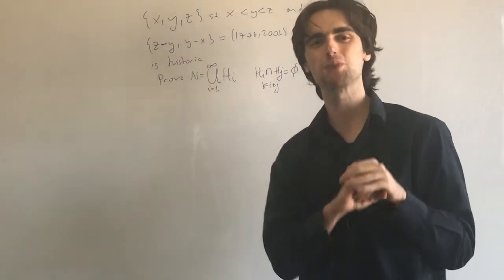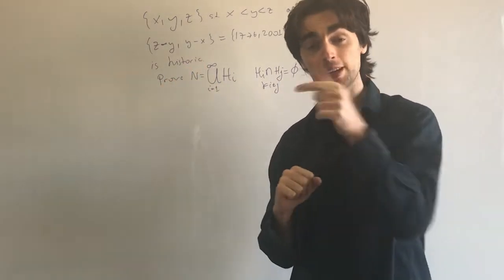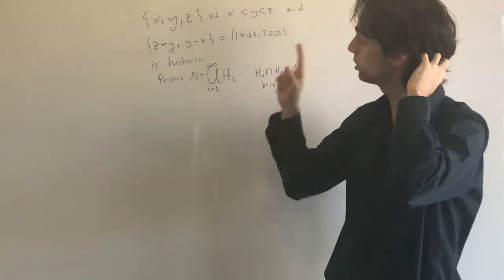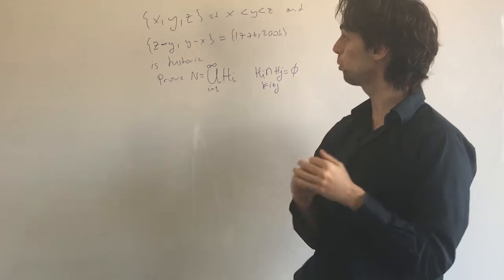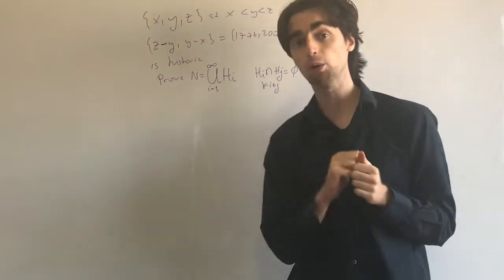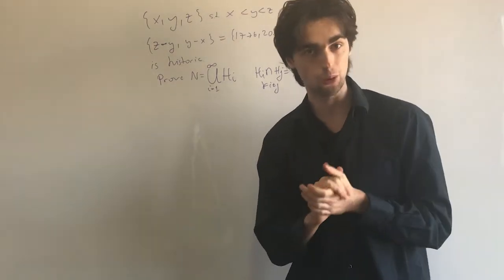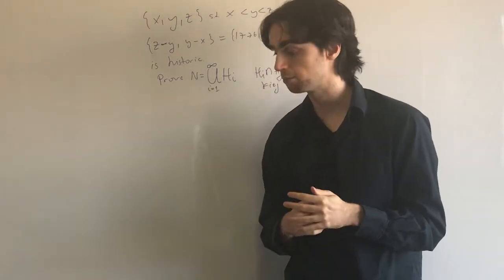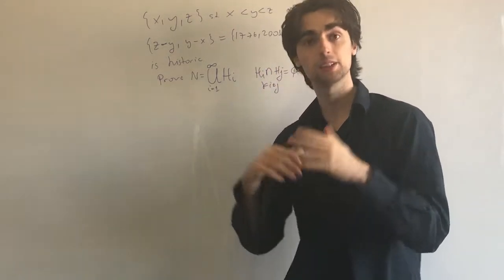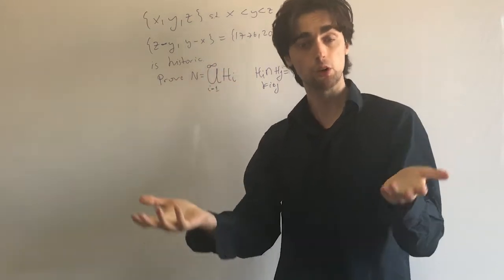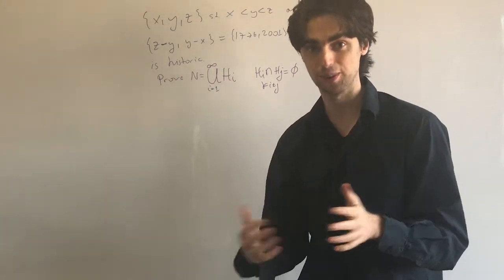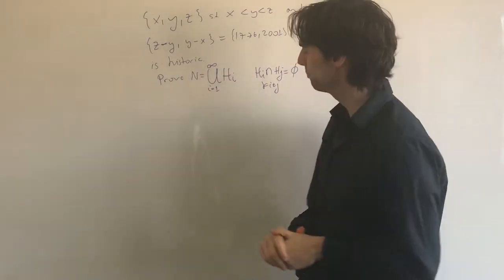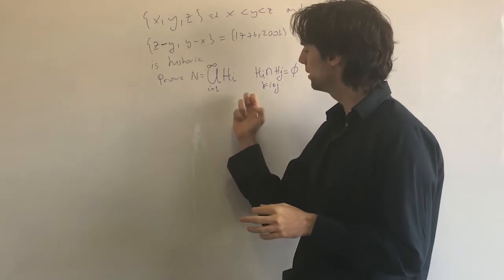Hello fellow problem solvers. We're going to be doing a problem from the 2001 IMO shortlist, problem number C4. This is also a problem in Pranav Sriram's Olympiad Combinatorics, chapter 1 on algorithms — and that's a hint.